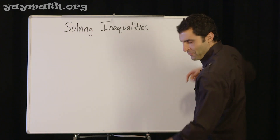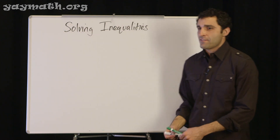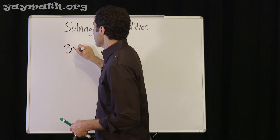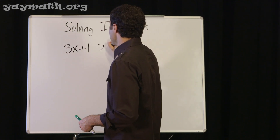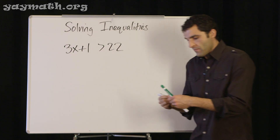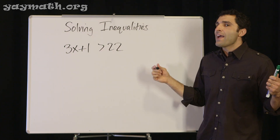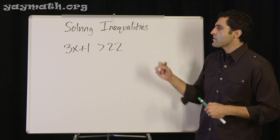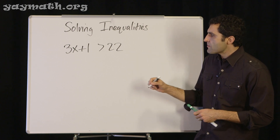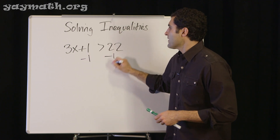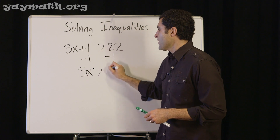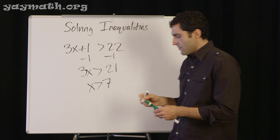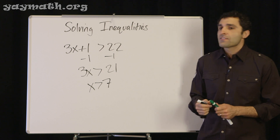Let's solve: 3x + 1 > 22. All the rules apply except multiplying and dividing by a negative, so we can burn through this. Subtract one on both sides — 3x > 21. Divide both sides by three — x > 7. No problem.